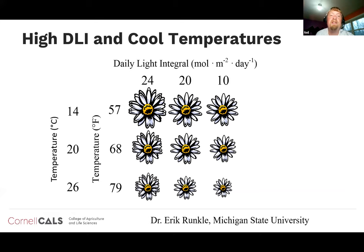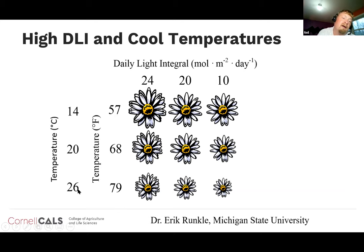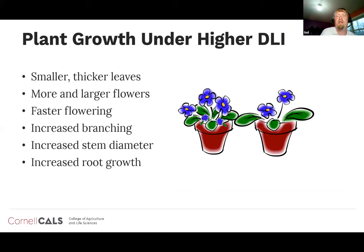Higher daily light integrals also affect flower size. While a plant may flower earlier under warm temperatures, flower size tends to be bigger under cooler temperatures — a 14°C-grown flower is bigger and wider than one from a 26°C plant. Higher daily light integral provides more carbohydrate resources the plant can direct toward flowers, giving bigger flower size under that combination of cooler temperatures and higher DLI.